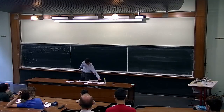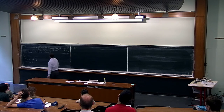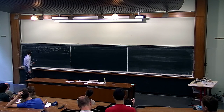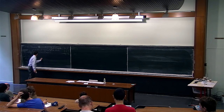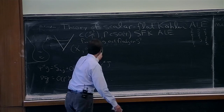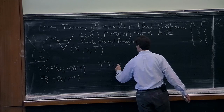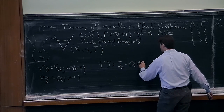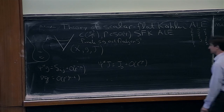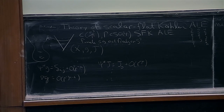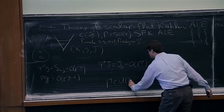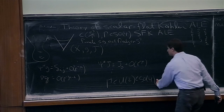I also want the metric to be Kähler. That gives us a complex structure J. So we have (X, g, J). When you pull back the complex structure, J looks like the standard J plus decaying terms, with similar decay for derivatives. In the Kähler case, this forces the group Γ to be in U(2). Kähler just means J is parallel.